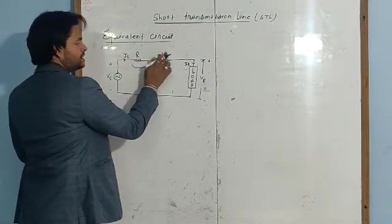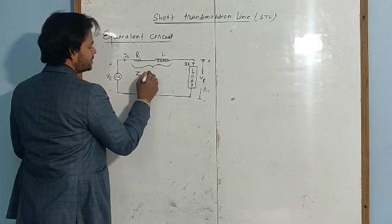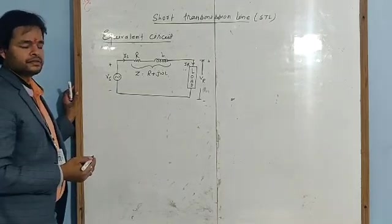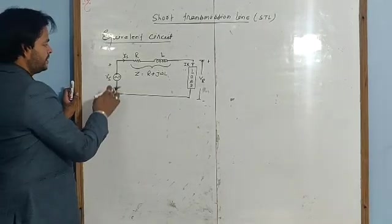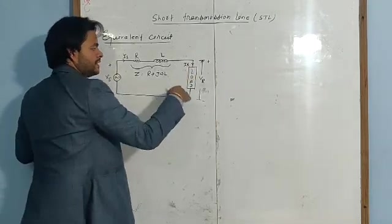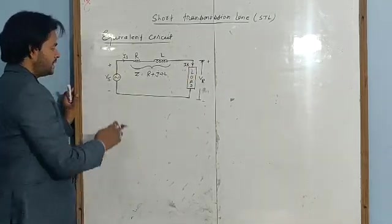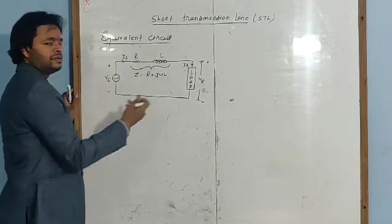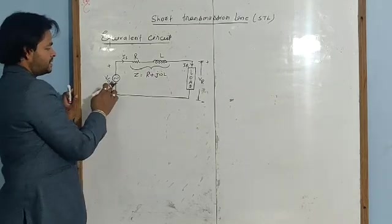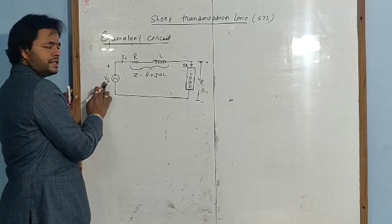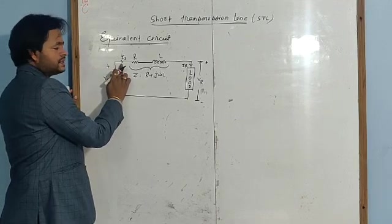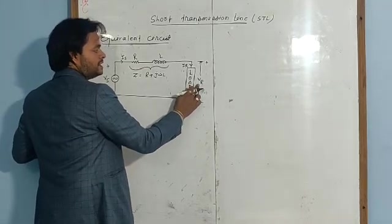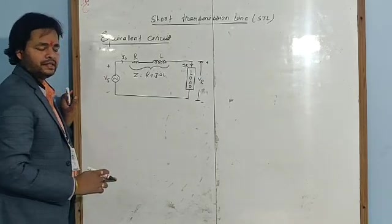This is the sending end; this is the receiving end. As you know, the sending end is where the source is applied, and the receiving end is where the load is connected. At the sending end, the voltage is the sending end voltage and the current is the sending end current. At the load end, there is the receiving end voltage and the receiving end current.